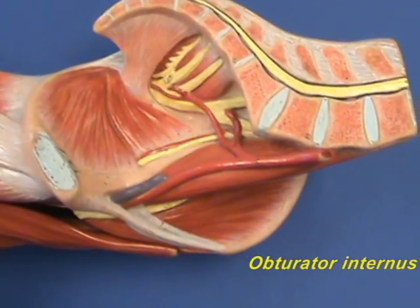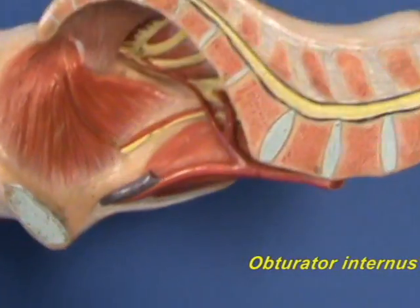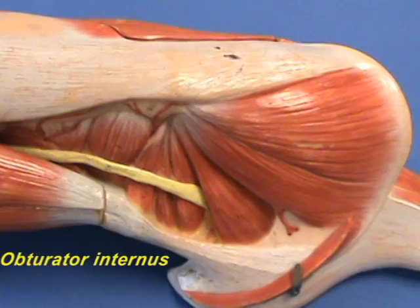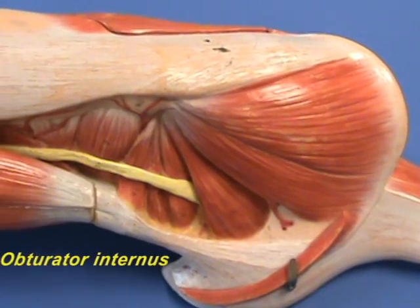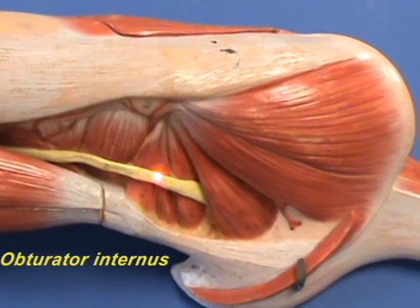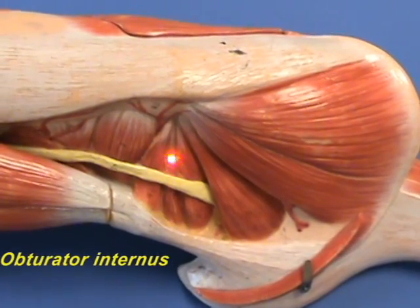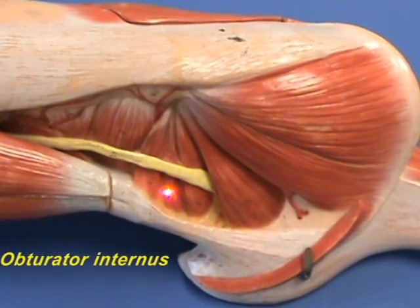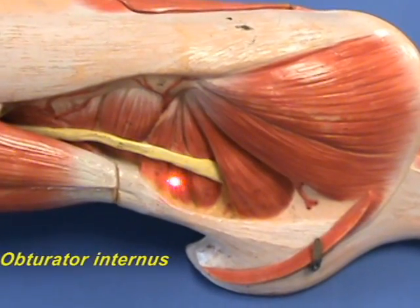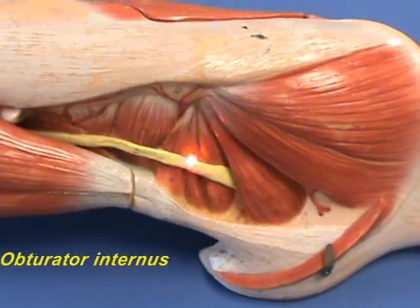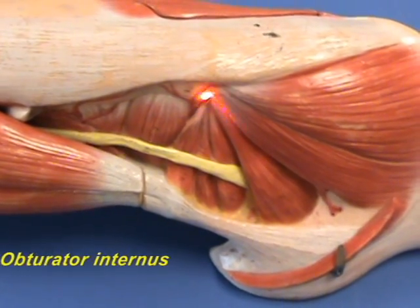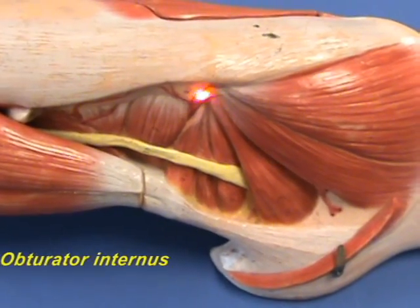Let's turn this over to follow the course of the fibers. Here are the fibers of the obturator internus after they pass over the lesser sciatic notch. The fibers then converge on their insertion on the greater trochanter of the femur.